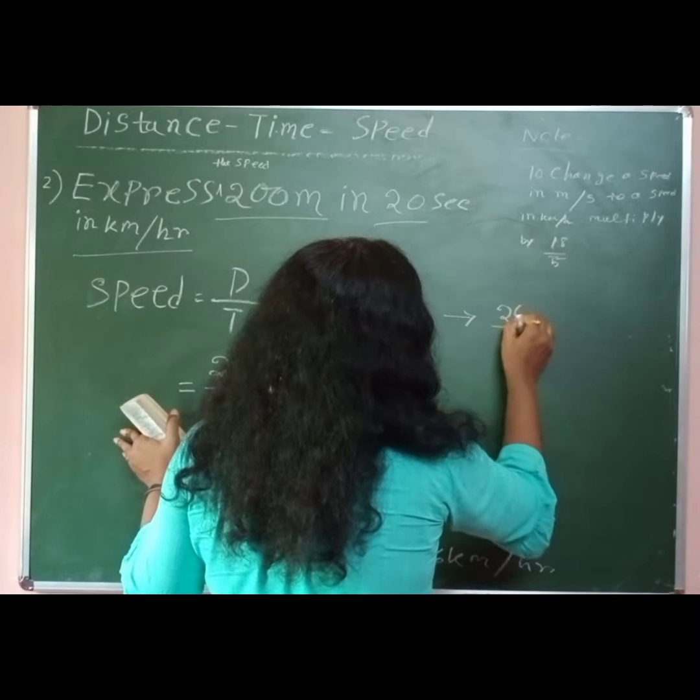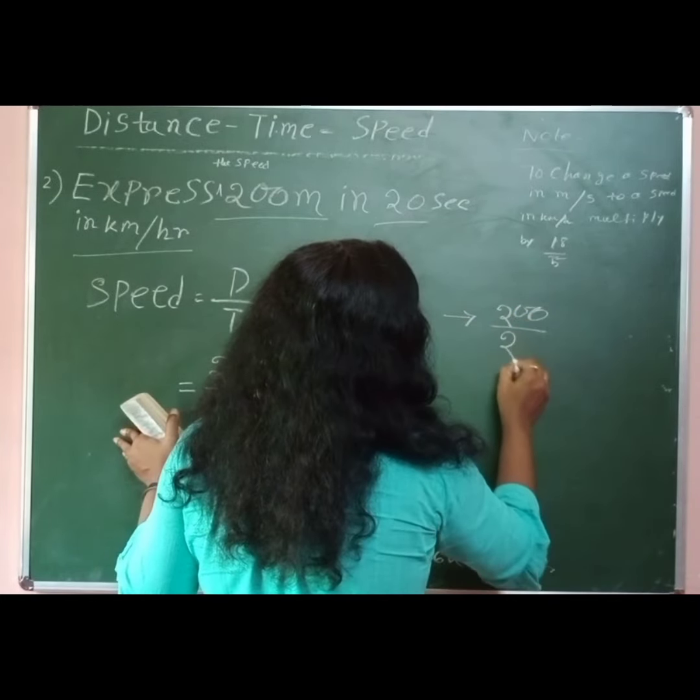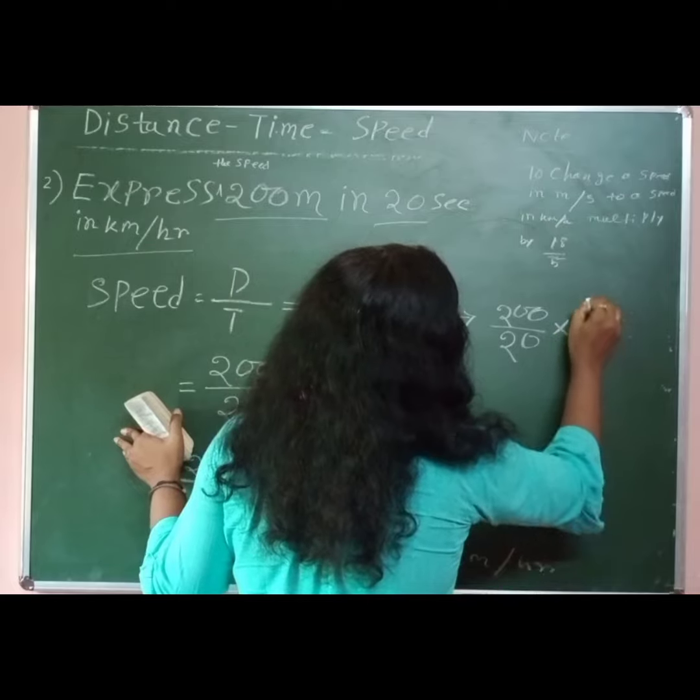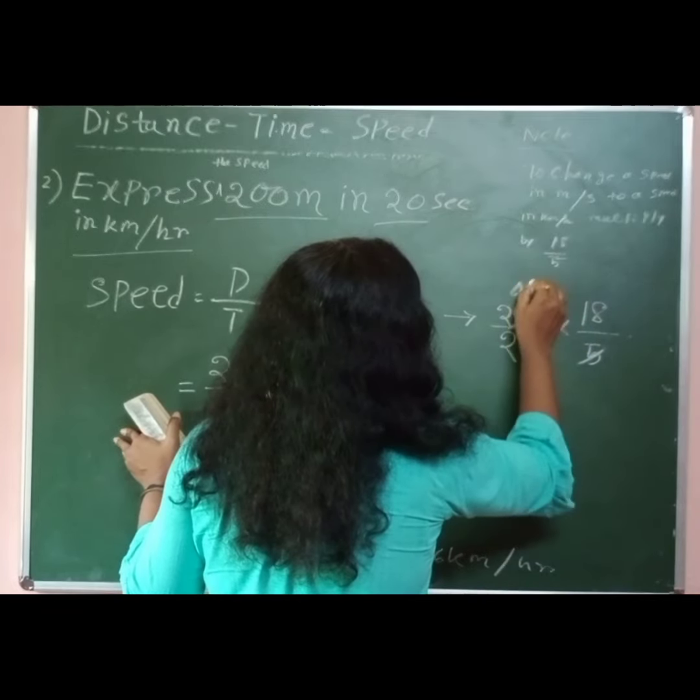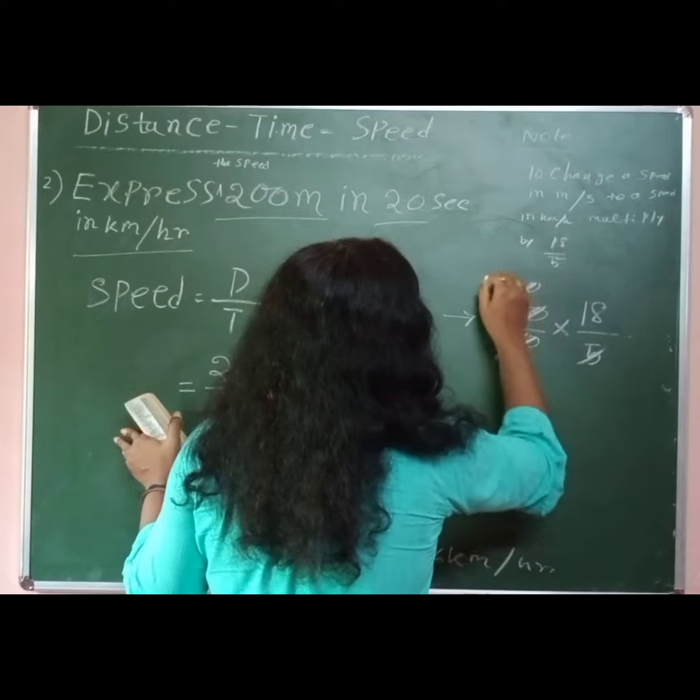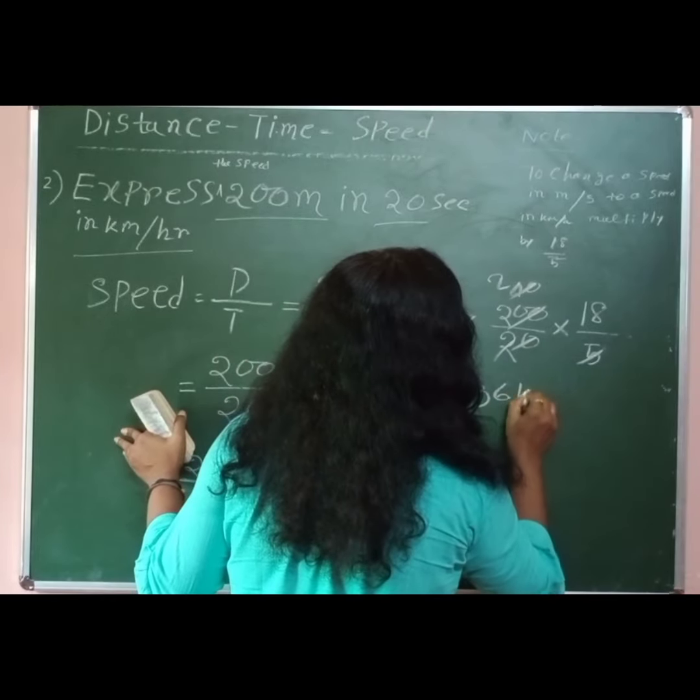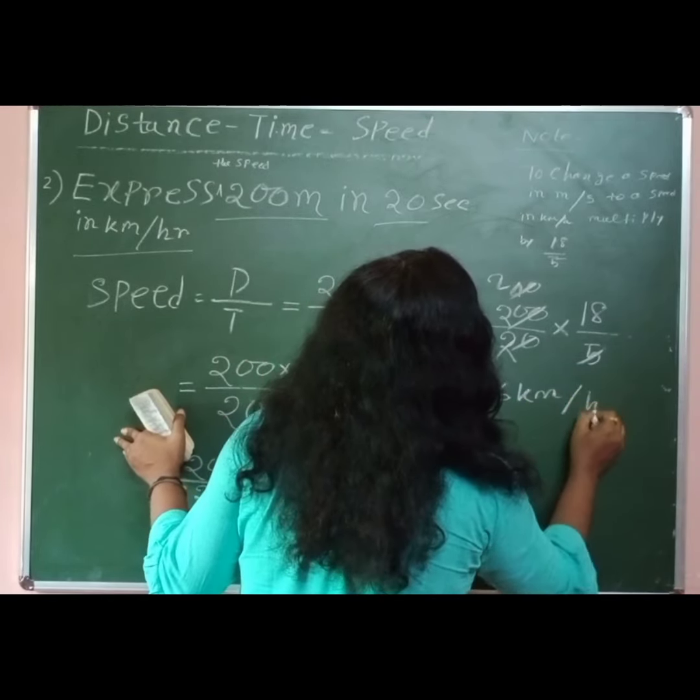200 and 20 into 18 by 5. That means 36 kilometers per hour.